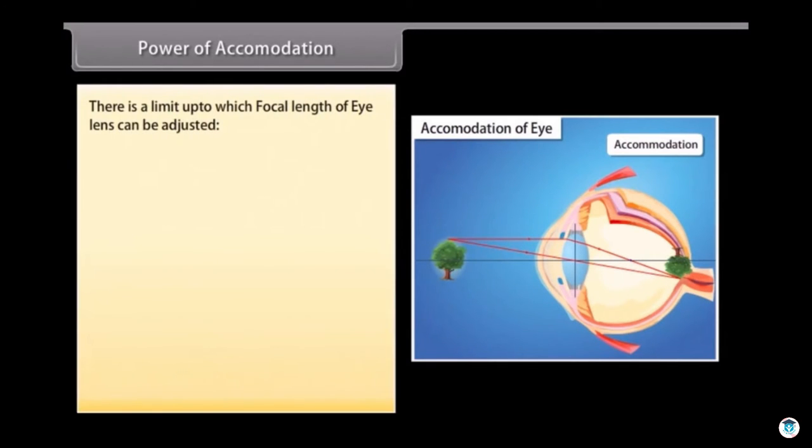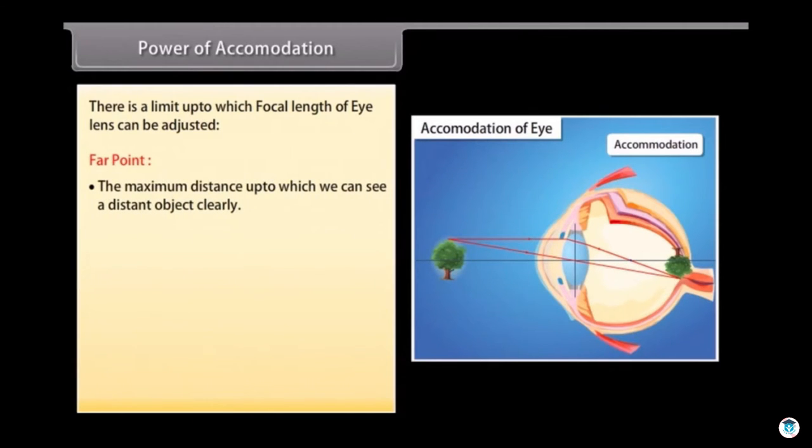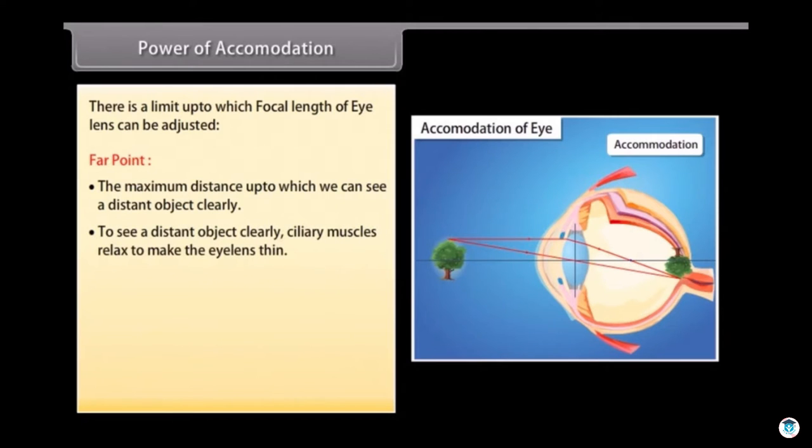There is a limit up to which focal length of eye lens can be adjusted. Far point: The maximum distance up to which we can see a distant object clearly. To see a distant object clearly, ciliary muscles relax to make the eye lens thin.